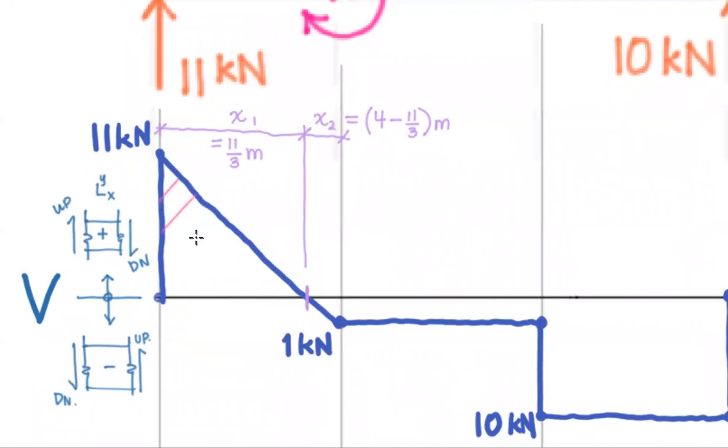Let's get these areas underway. So this large positive area here, I'm going to call this area one. It has a base of 11 thirds meters. It has a height of 11 kilonewtons, and it is a triangle. So I want to get one half in the mix there. So these units are kilonewtons times meter, which is great because those are the units of bending moment. We can multiply this out, and I'll just give you the result: 20.16 bar kilonewtons times meters.